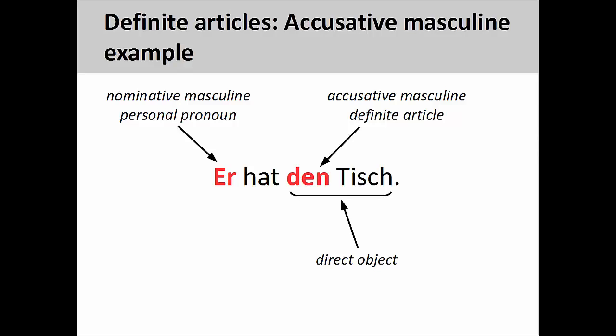Accordingly, the masculine definite article Den indicates that the following noun is in the accusative case and receives the action being performed by the subject. In other words, the noun Tisch receives the action of being had or possessed by the subject of the sentence: Er hat den Tisch — He has the table.